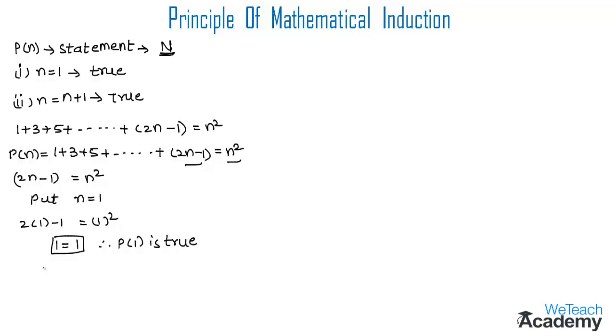Now, assuming P(n+1) is true, let's substitute n with n + 1. We get 2(n + 1) - 1. By multiplying 2 with the group n + 1, we get 2n + 2 - 1 = 2n + 1. This is the next term of the given statement.